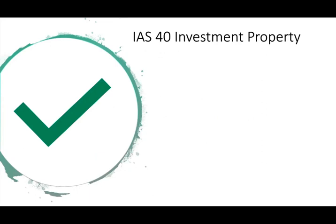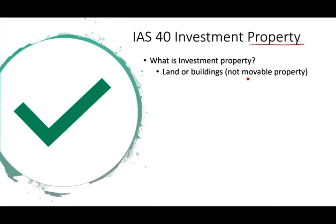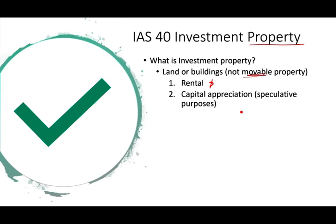IAS 40 — investment property. The first thing is: what is an investment property? We know what property is — property, plant and equipment, land, building, and so on. But what does it mean for property to be an investment? It means we buy a property such as land or building — immovable, you cannot move it like a vehicle — and the purpose is either to rent it and collect rental income, or for speculative purposes: you're looking for capital appreciation. You bought something for a hundred thousand hoping it grows to 125 thousand so you can sell it.